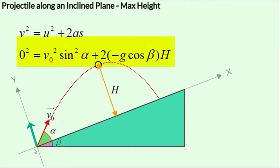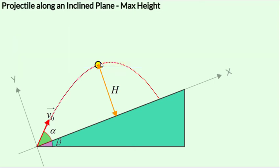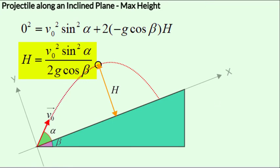The initial velocity along the y-axis is V₀ sin α. At the maximum height position along the y-axis, the final velocity of the projectile in the y-direction will be 0. The acceleration along the y-direction is minus G cos β and the y-displacement is H. From here, we get H as V₀² sin² α over 2G cos β, exactly the same result obtained earlier using the half-time concept.